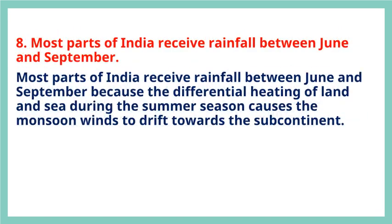Question 8: Most parts of India receive rainfall between June and September. Most parts of India receive rainfall between June and September because the differential heating of land and sea during the summer season causes the monsoon winds to drift towards the subcontinent.